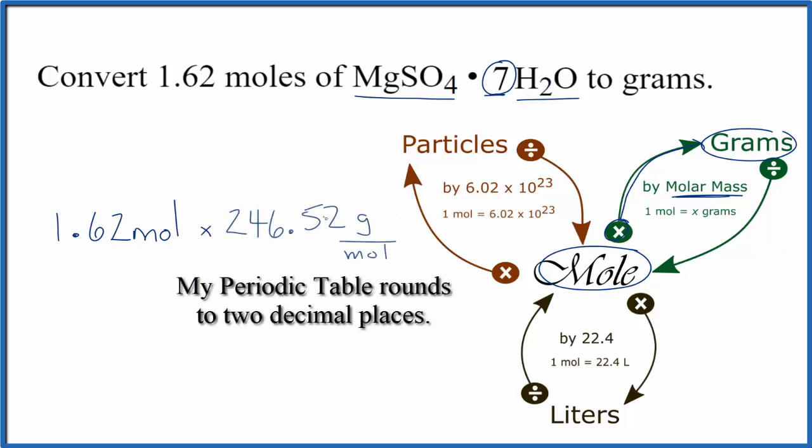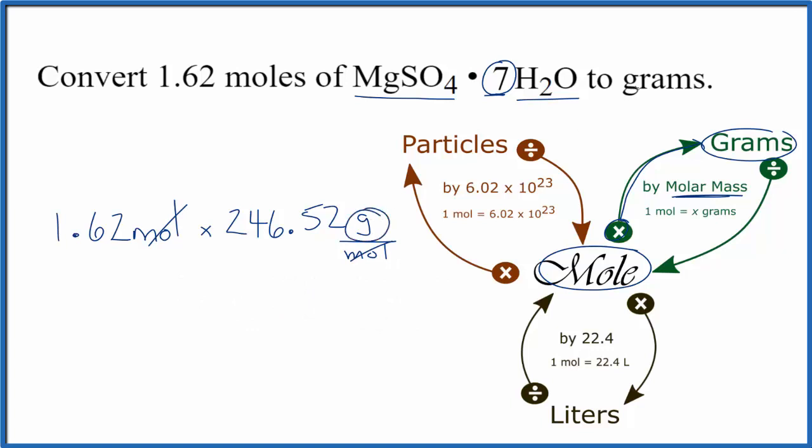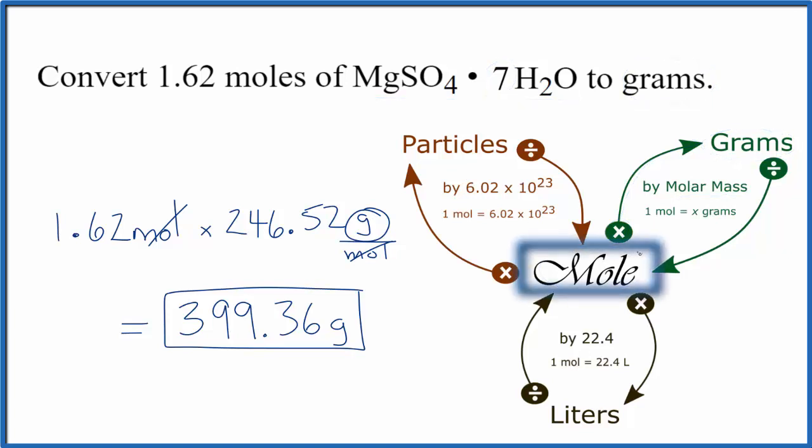The units for molar mass are grams per mole. Now we multiply, moles on the top and bottom cancel out, and that leaves us with grams. Grams is what we're looking for, so we know we set this up correctly. We multiply and get 399.36 grams of magnesium sulfate heptahydrate.